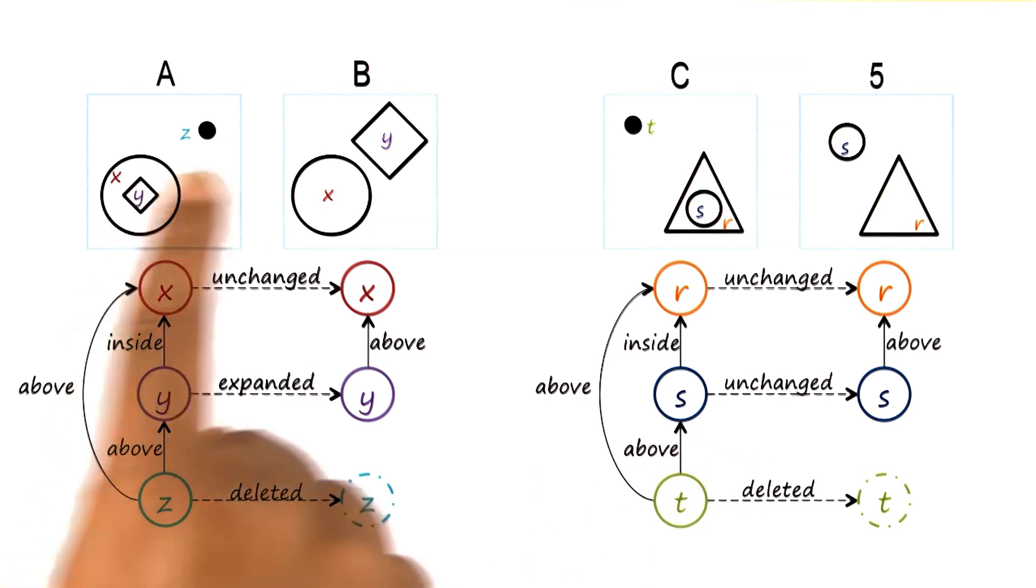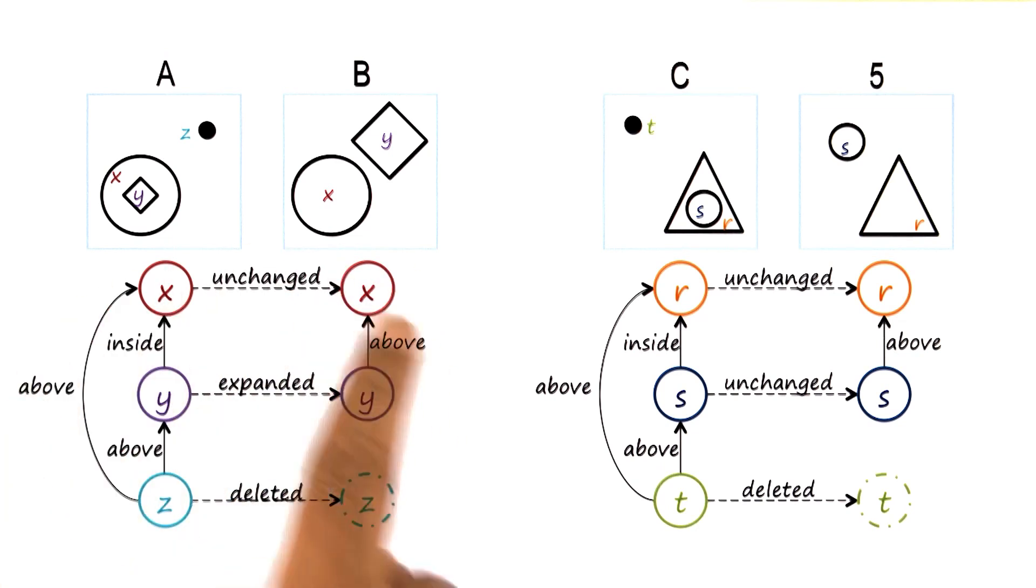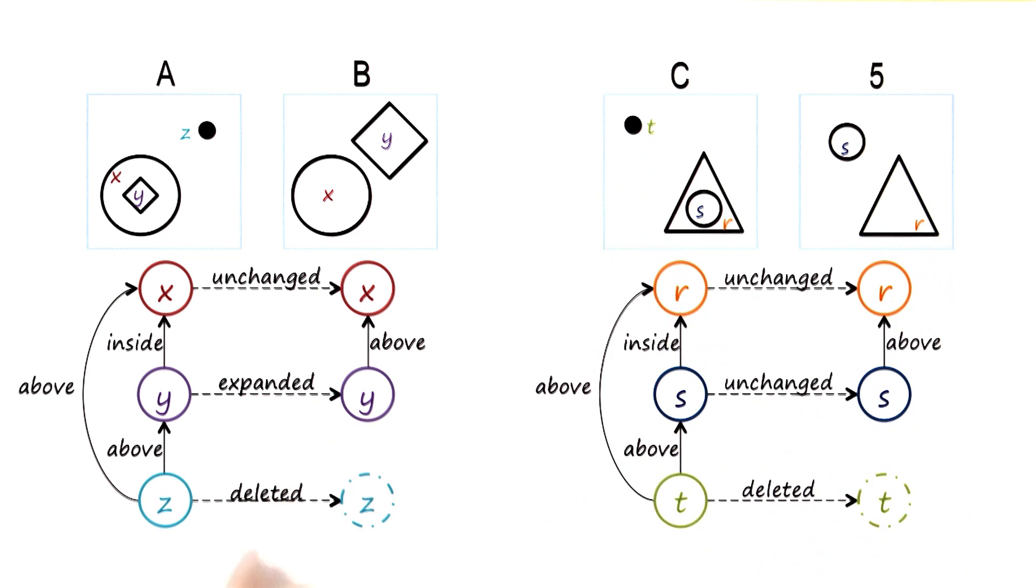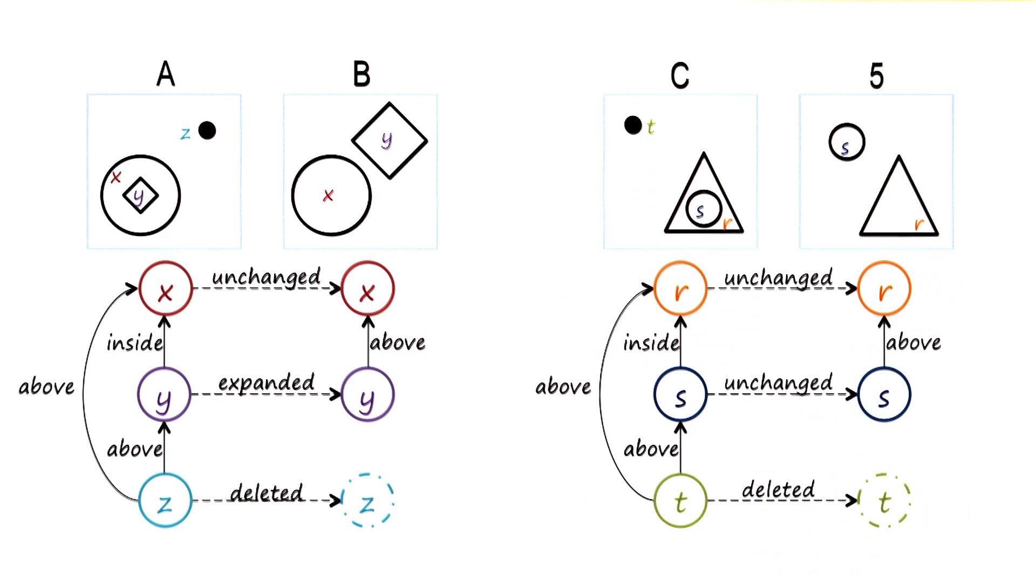Thus they may extract the transformation from A to B in the form of a semantic network shown here. And similarly, they may extract the transformation from C to 5 through the semantic network shown here. They would then compare these two semantic networks and decide whether or not A to B is similar to C to 5. You may have done something similar in your early projects.